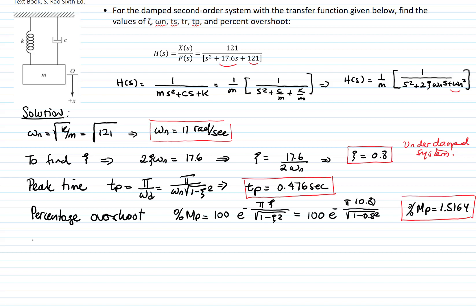Then we have the settling time, which means that the response becomes within 2% of 1. So that will be equal to 4 over zeta omega n, and it's 0.4545 seconds.